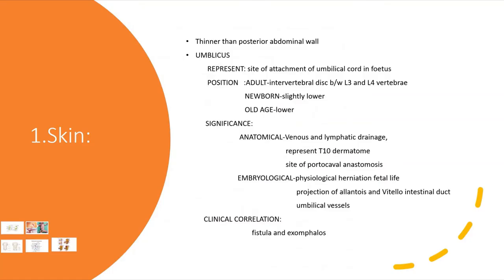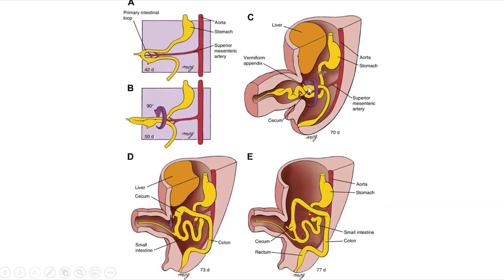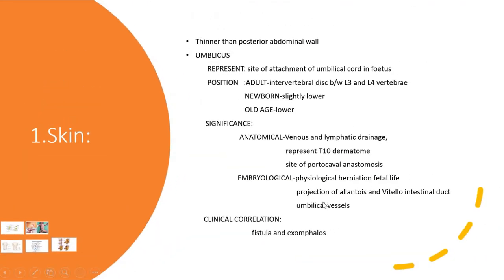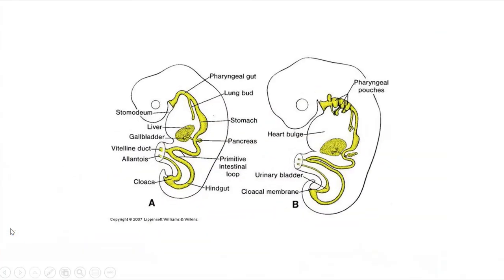Regarding embryological significance, the first is the physiological herniation of the midgut loop in fetal life. As seen in the image, the midgut loop herniates through the umbilical cord from the abdominal cavity during the 5th to 10th week of intrauterine life, and returns to the abdominal cavity during the 10th to 12th week. This occurs because the rapidly developing intestinal parts cannot fit within the fetal abdominal cavity; once enough space is available, the midgut loop returns.